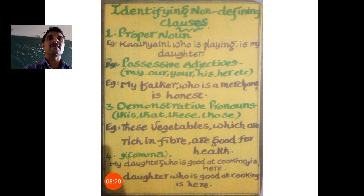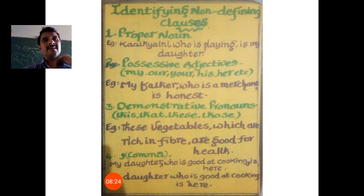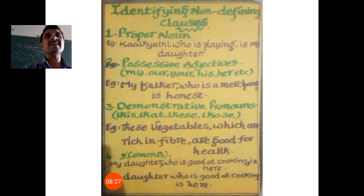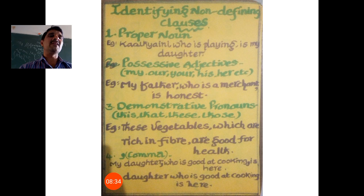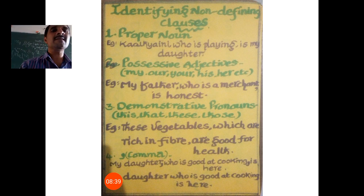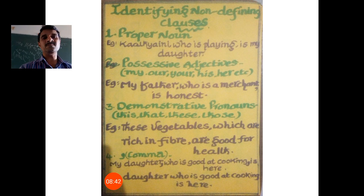The first clue: a proper noun as the antecedent. For example, 'Katya Aini, who is playing, is my daughter.' Here, 'Katya Aini' — the identity is already given. 'Who is playing' is additional information. Remove 'who is playing' and read: 'Katya Aini is my daughter.' That's enough — so it is non-defining.